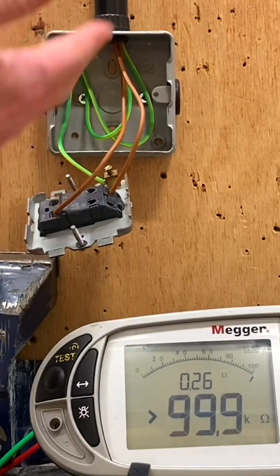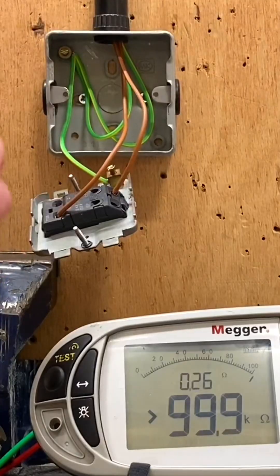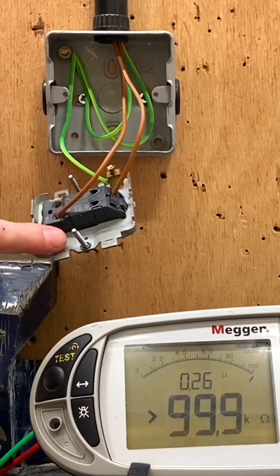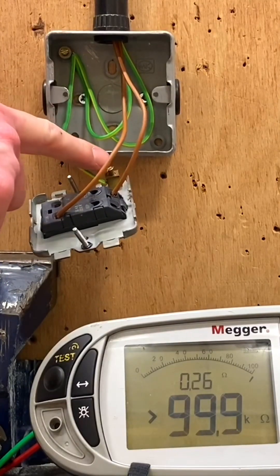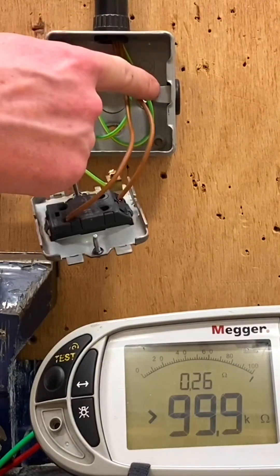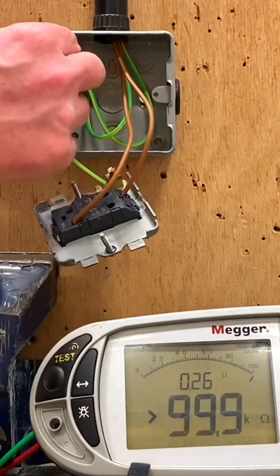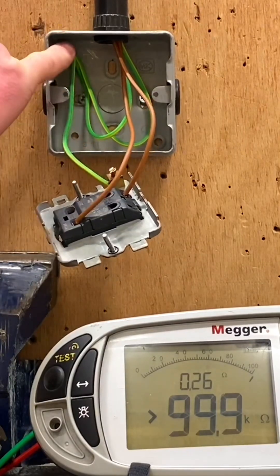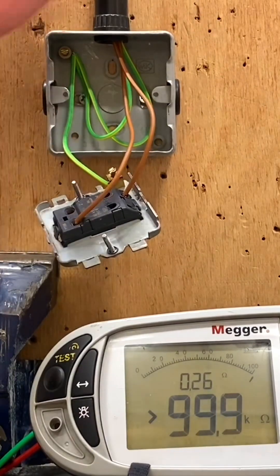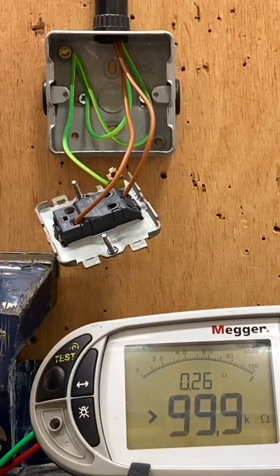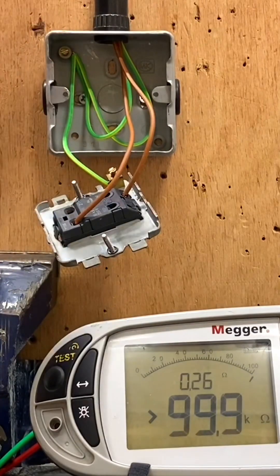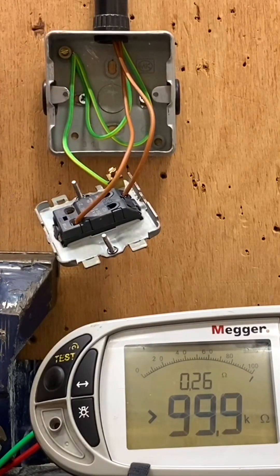This proves the CPC got to the front plate, got to here, got to here, and got to the box as well. It's really important the frame is earthed and the box is earthed, and we don't just prove it on the actual CPC terminals. We're now going to go up to the light, operate the switch when we're up there as part of the polarity test, and prove there is a CPC connected to the light.